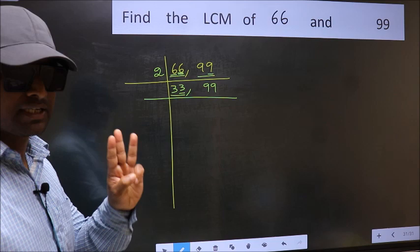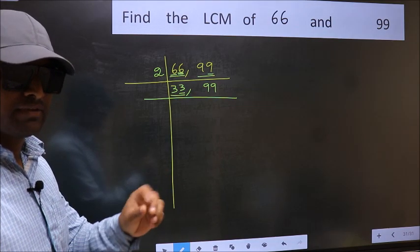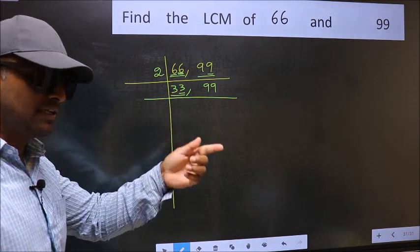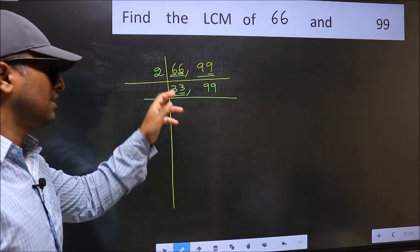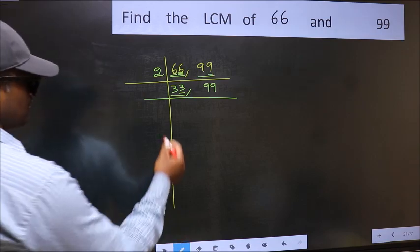Next prime number 3. To check divisibility by 3, we should add the digits. 3 plus 3, we get 6. And 6 is divisible by 3. So this number also divisible by 3. So take 3.